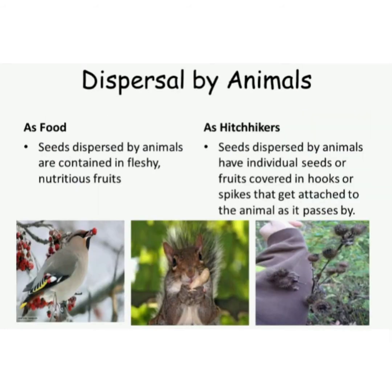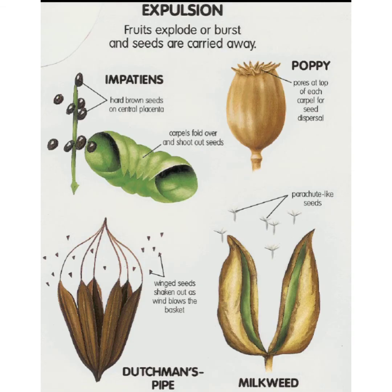The next method is dispersal by animals. Seeds of some plants have hooks and spines, so these seeds stick to the bodies of birds and animals and are carried off to far away lands. For example, cocklebur and burdock seeds stick to the bodies of birds and animals.